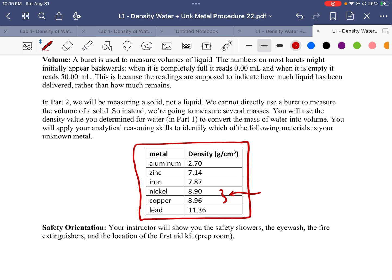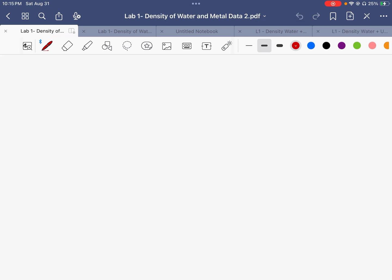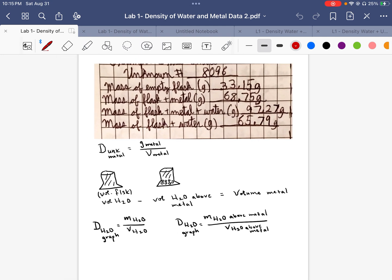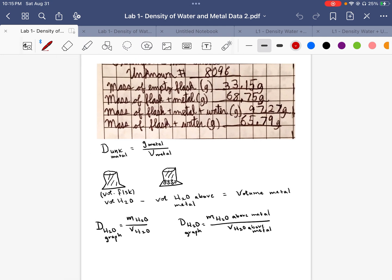Let's talk for a minute, though, about those calculations. So let's go back to the data from that one. Here I've set up a picture of what's going on. Here's my data that I have – mass of the empty flask. I've got the mass of the flask plus the metal. Then I've got the mass of the flask plus the metal plus the water. And then the last one is the mass of the flask and the water.